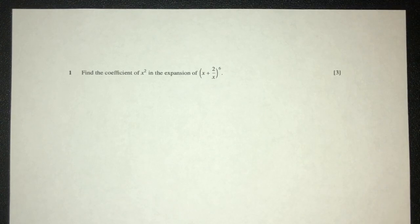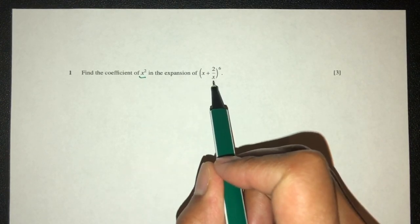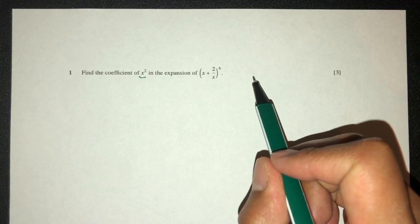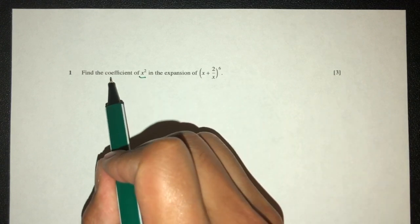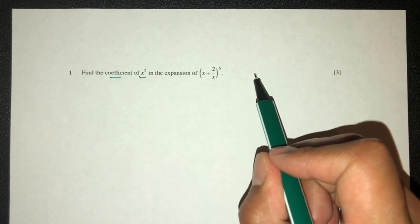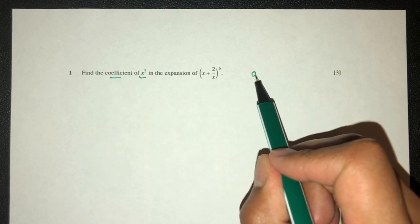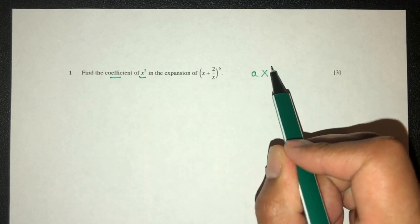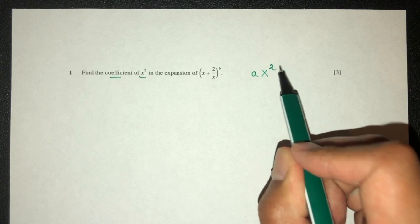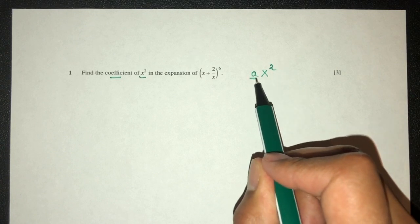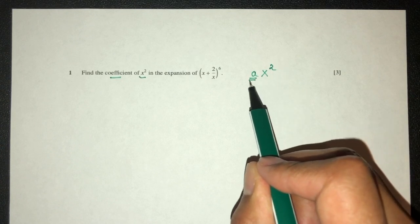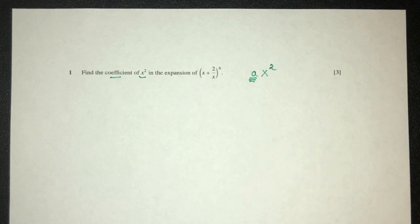We have to find the coefficient of x squared in this expansion. The coefficient of x squared — for example, if you have ax squared — the value we need to give is just the value in the beginning. So let's first find the term in x squared.